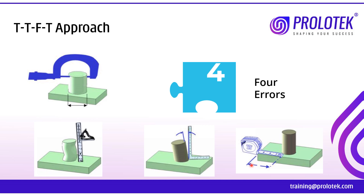These errors can arise from the five M's: man — an operator not loading raw material properly or selecting the wrong program; machine — choosing the wrong machine; material behavior; methods; and money — how much we are ready to spend to get a perfect part. Once we know the error and how to control it, our work becomes easier.